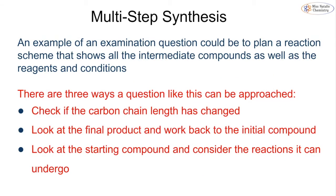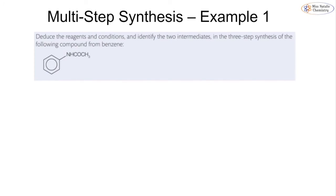A typical exam question for this topic is to plan out a reaction scheme, worth up to five marks, showing all intermediate compounds with reagents and conditions. There are three things to check: has the carbon chain length changed, and if so, by how many carbons — use a cyanide group or Grignard reagent accordingly. You can either look at the final product and work backwards, or start from the starting material and work forwards. The question here asks for a three-step synthesis from benzene to a compound with an amide group on the benzene ring.